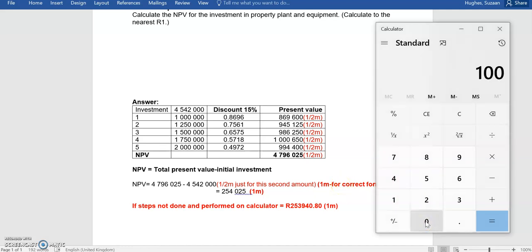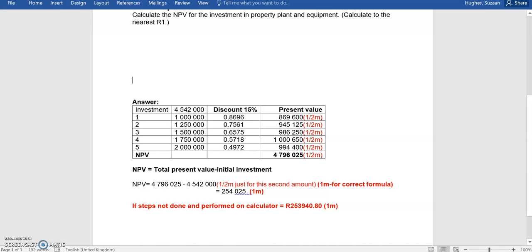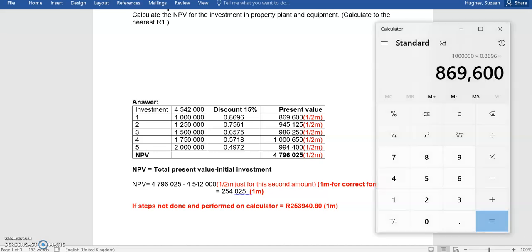In year one, we've got a million rand coming into the project. Isn't that a lovely return? And we're going to multiply it by our discount rate of 0.8696. Now, as we do that, you'll note that the answer is 869,600. Let's do the next one.